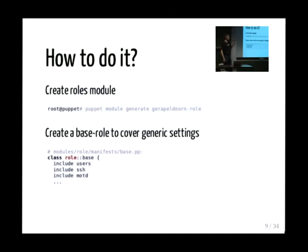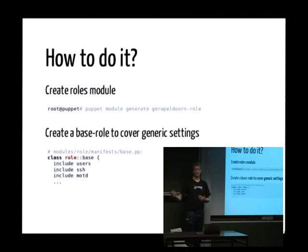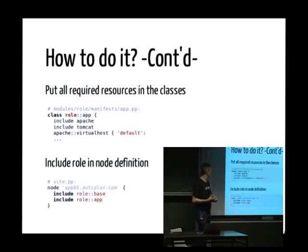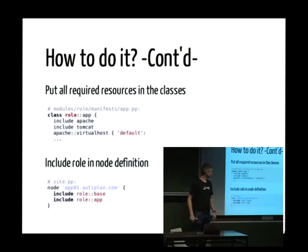How do you create such a role? You just generate a module or create the directories manually. I always create a role_base that will be applied to all of my machines — it includes some basic classes I want set up the same way everywhere. For each role, I create a separate class in my role module — for instance role_app, which includes Apache and Tomcat. You can also specify a resource directly if you want. Then you include the role in your node definition in the site.pp. On the app01 server, for example, role_base and role_app will both be included.